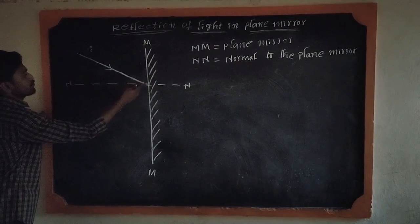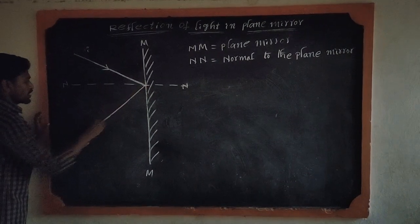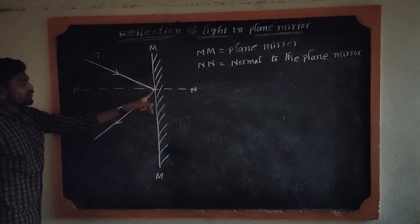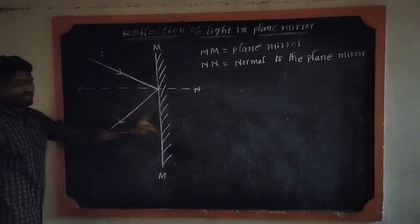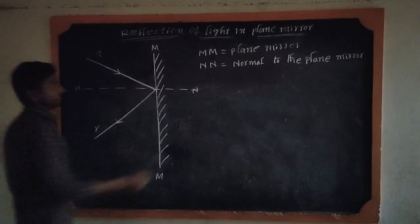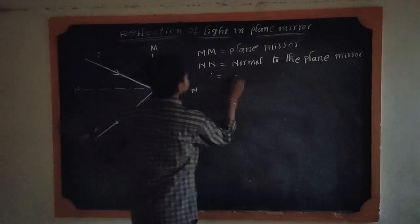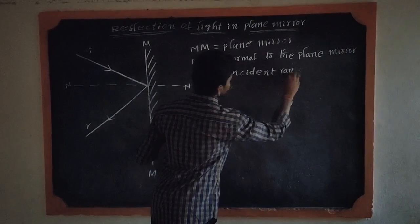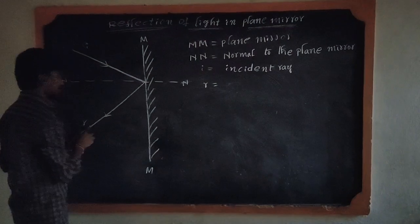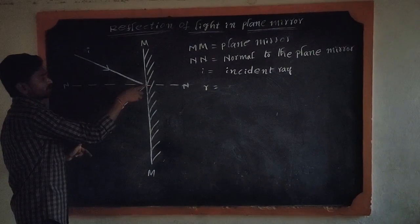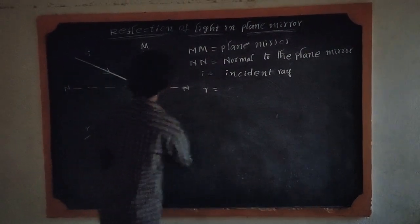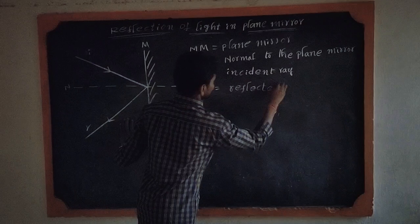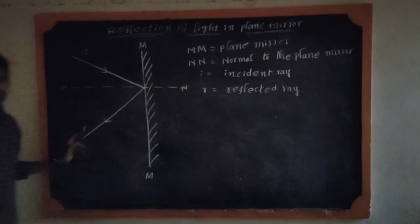After that, when the light ray hits the mirror, it forms a reflected ray. The reflected ray is the light ray that moves away from or bounces from the plane mirror. Such a ray is called a reflected ray. This is the reflected ray.